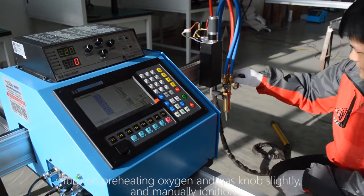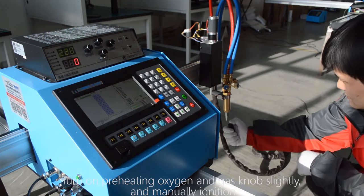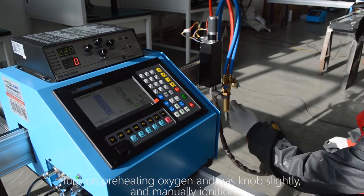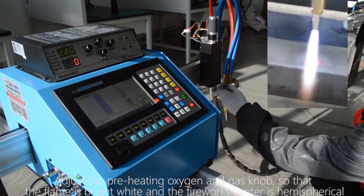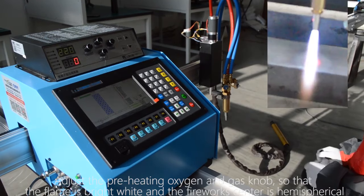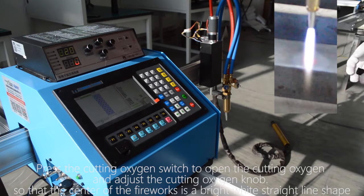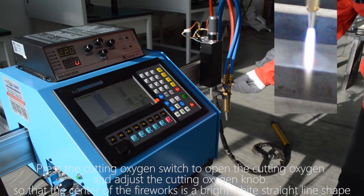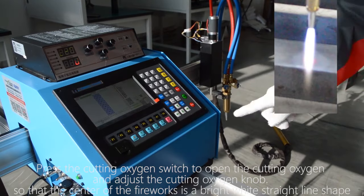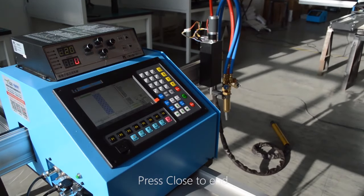When adjusting the fire, open the preheating oxygen first. Gas and preheating oxygen solenoid valve will be opened at the same time. Adjust the preheating oxygen and gas knob so that the flame is bright white and the fireworks center is hemispherical. Press the cutting oxygen switch to open the cutting oxygen and adjust the cutting oxygen knob.